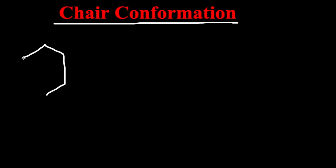For today's video, we will be talking about chair conformation. Chair conformation happens for a cyclohexane — 'cyclo' meaning the shape, 'hexane' meaning six sides. This shape would be made into a chair.